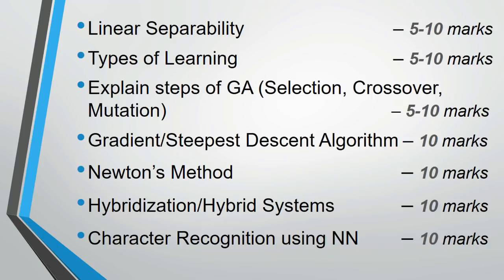The next slide has a lot of important things — nearly one full paper's worth. Sometimes they ask a short note on gradient descent and Newton's method for 10 marks. Sometimes they ask about the steps of GA — selection, crossover, mutation — for 5 or 10 marks. Then, the types of learning: write an introduction first, then cover the three types of learning with diagrams. Hybridization and hybrid systems also come — what are hybrid systems and what is the need for hybridization.